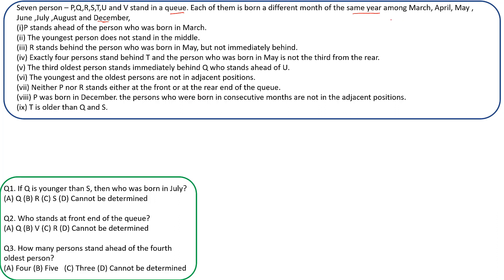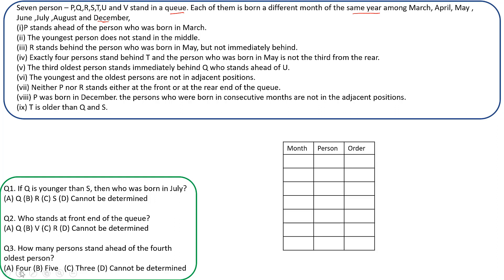We'll have three columns in our table: Month, Person, and Order. The order goes from 1 to 7, representing their positions in the queue. We have to place each person and associate their birth month accordingly.